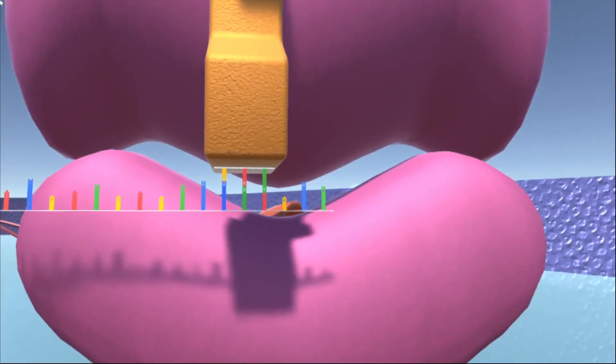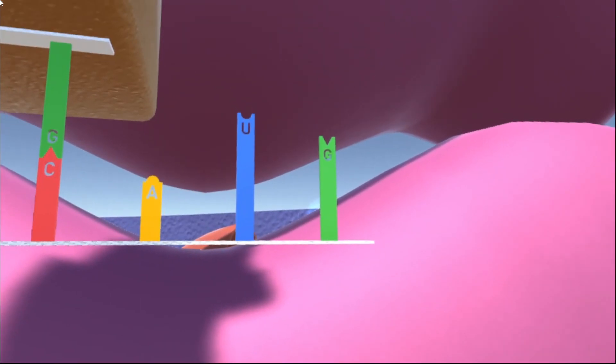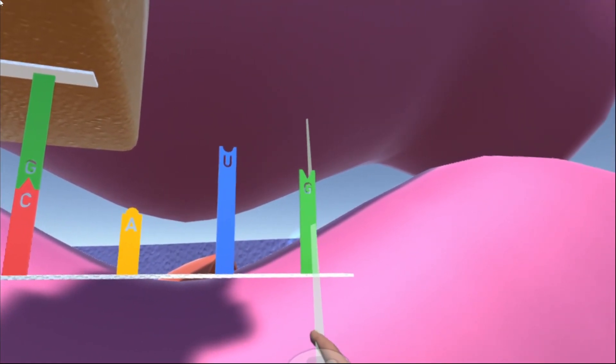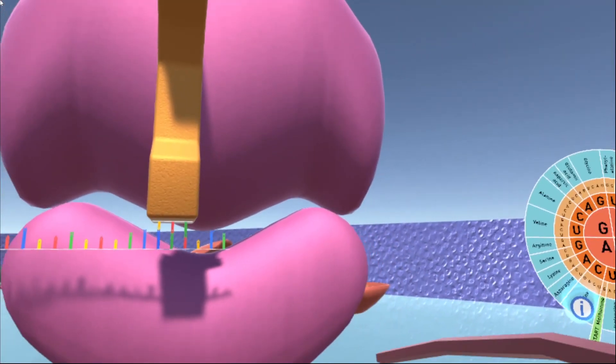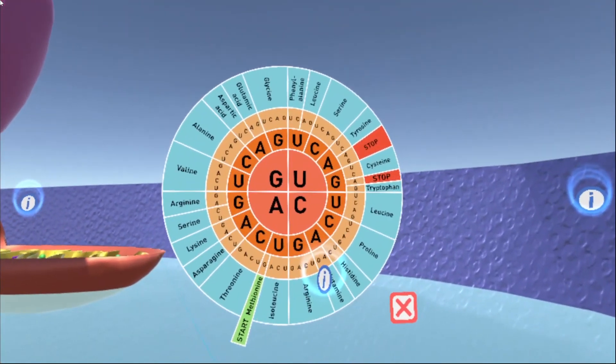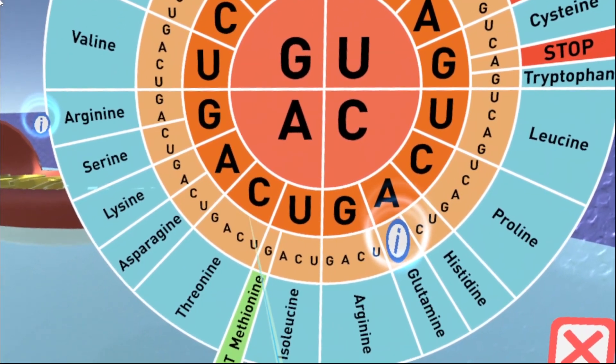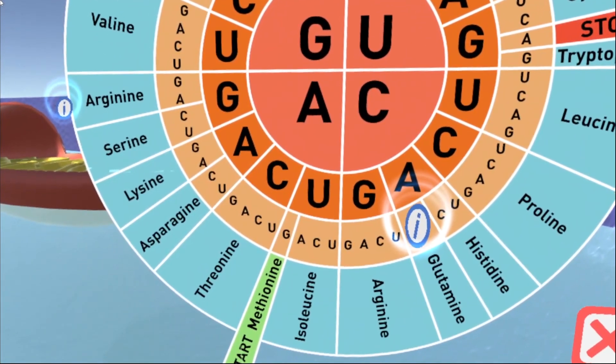Similarly, if we look at our very first block of three here, we've got A, and then U, and then G. And because that's the very first block, A, U, G is our start codon, methionine.